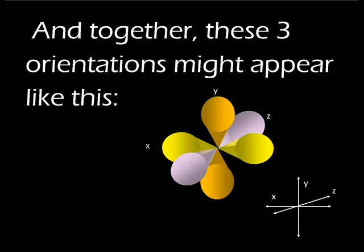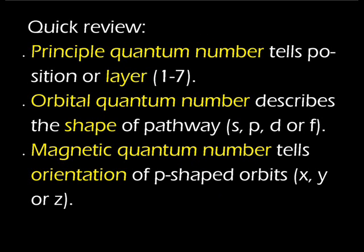Let's pause and review. The principal quantum number tells the layer the electrons are found in around the nucleus. The orbital quantum number tells us the shapes — s, p, d, and f — of the pathways that the electrons may be following. The magnetic quantum number tells us the orientation in space that the pear-shaped electron orbits may be found on. Let's continue with the fourth quantum number.